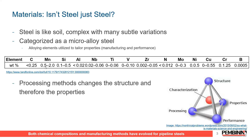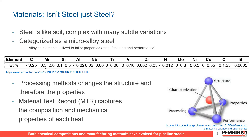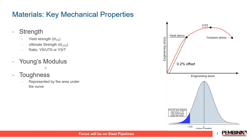We've now been able to manufacture higher and higher grades of steel to have stronger and stronger pipes, but with that comes complexity around girth welds. Every piece of pipe has a material test record — the MTR — which captures the composition, its essential fingerprint, as well as the mechanical properties of each heat. Along a 100-kilometer pipeline, there could be hundreds, if not thousands, of heats of pipe used in the construction of that asset.